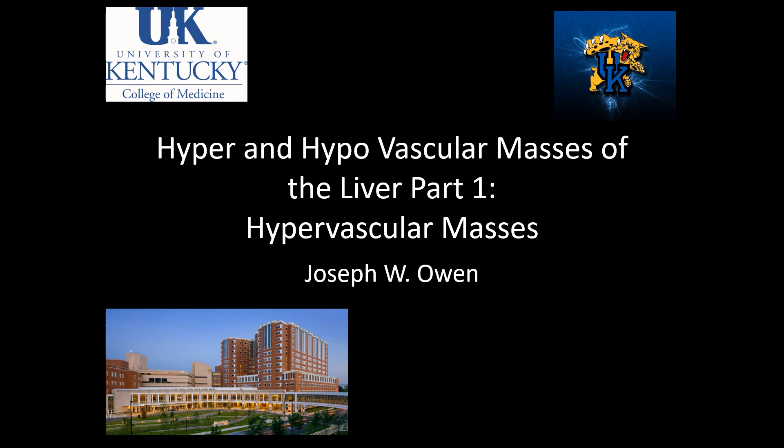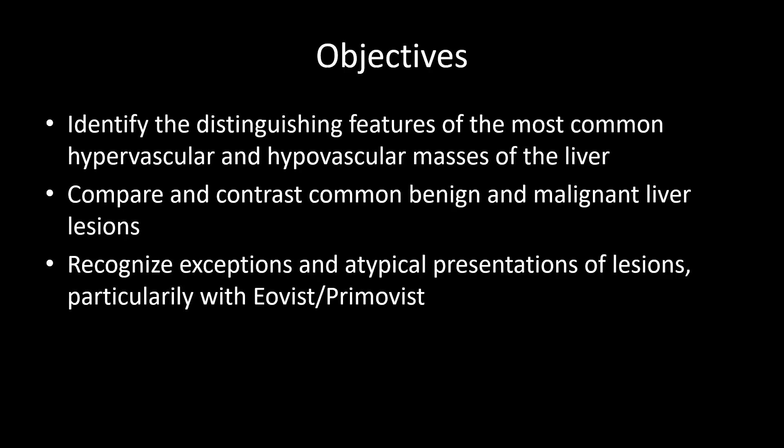Welcome to this three-part series where we will review hyper and hypovascular masses of the liver. Part one will cover hypervascular masses of the liver. I'm Joseph Owen. Thank you for joining. At the end of these screencasts, you should be able to distinguish the common hypervascular and hypovascular masses of the liver based on key imaging features, compare and contrast common benign and malignant masses, and recognize atypical presentations, particularly with Eovist or Primovist contrast.